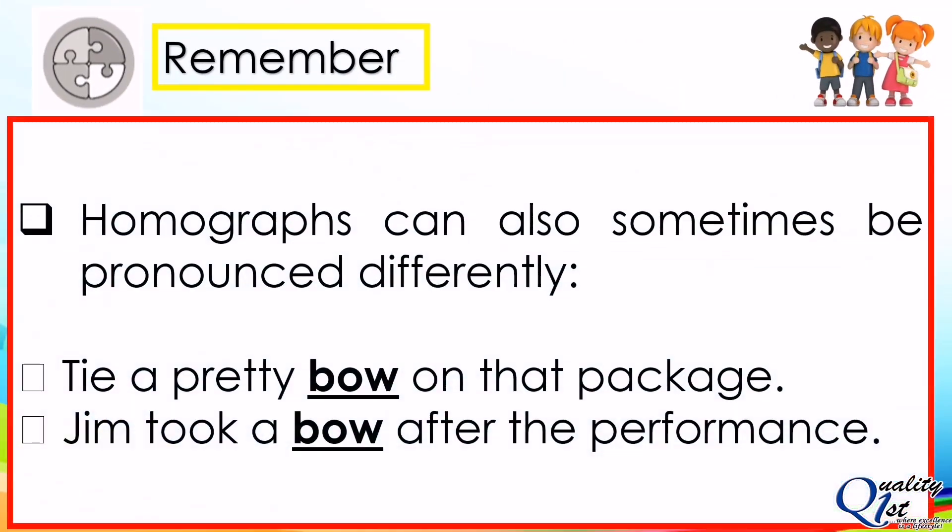Homographs can also sometimes be pronounced differently. Examples are: 'Tie a pretty bow on that package,' and 'Jim took a bow after the performance.'